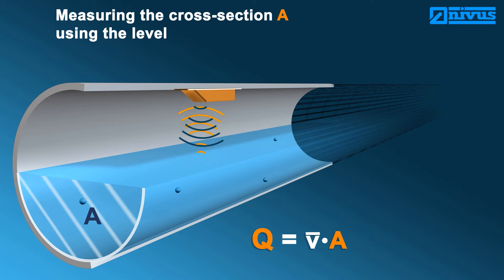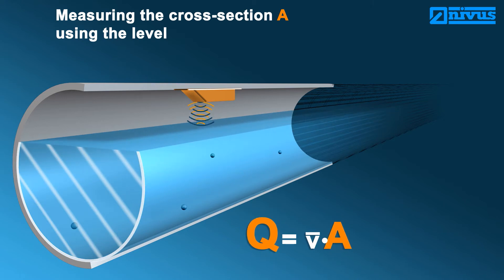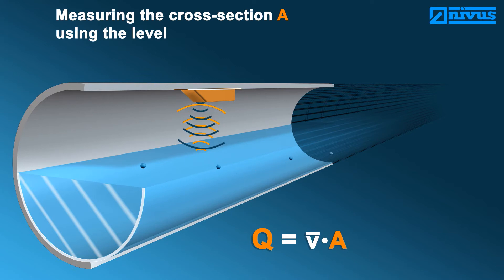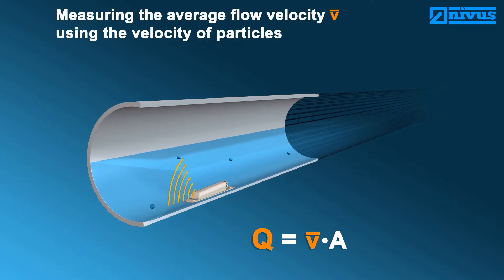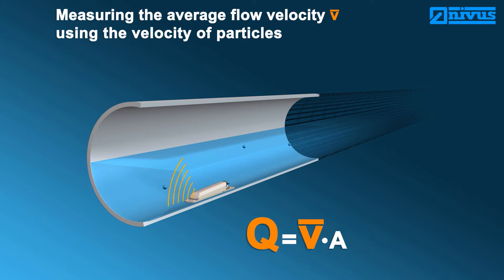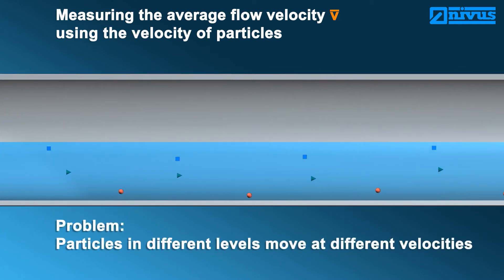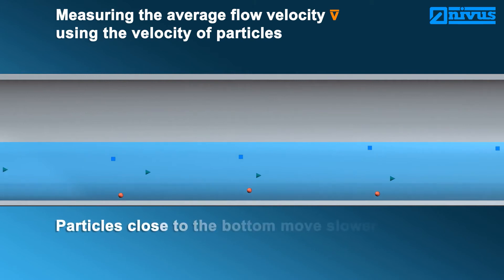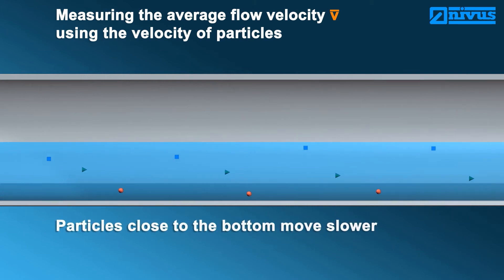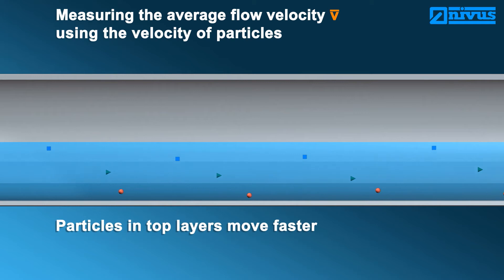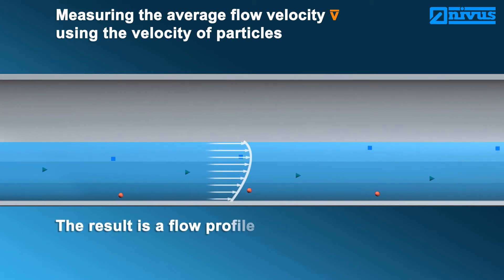The flow velocity is detected by measuring the particle velocity. Most media, particularly wastewater, contain dirt particles or gas bubbles moving with the same velocity as the medium. The velocity of the particles is measured using ultrasound. As soon as the velocity changes, the flow normally changes as well. The main difficulty while detecting the average flow velocity is that there are varying velocities prevailing at varying levels. The medium and hence the particles normally flow slower at low levels than at higher levels. From this, a so-called flow profile can be obtained.